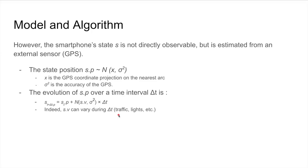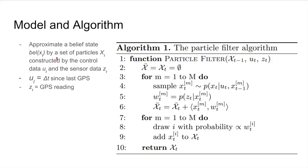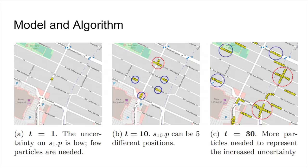We then approximate the belief state of our model by a set of particles constructed by the control data u_t, which is the delta time in the last GPS reading, and the sensor data z_t, which is the GPS reading. Here's the algorithm used, which is the particle filter.